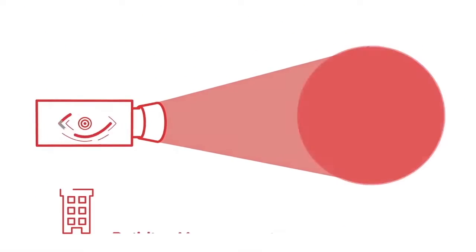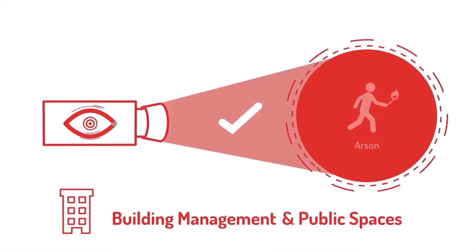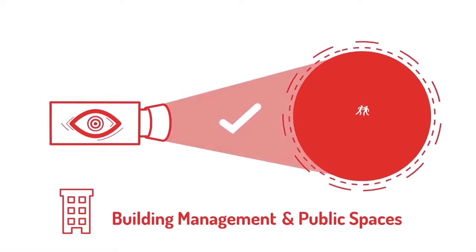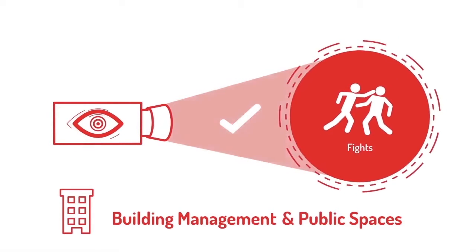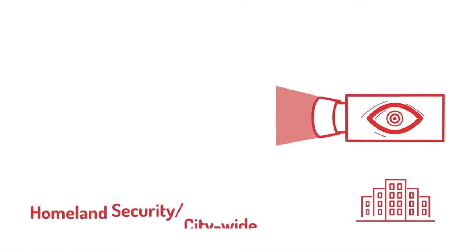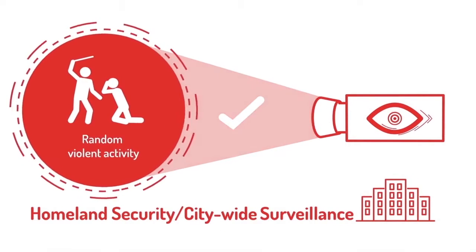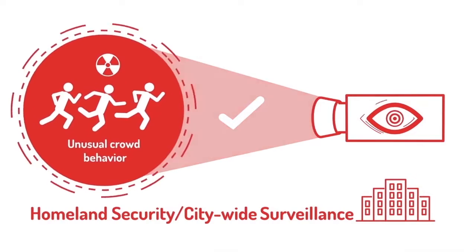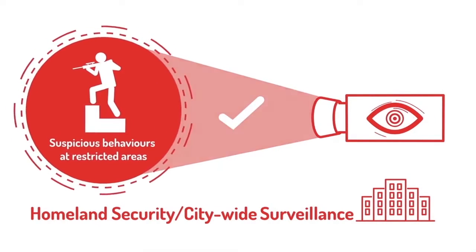ARVOS can be applied in buildings and public spaces, discovering a wide variety of abnormal events and behaviors, leading to better crime prevention and enhanced safety and security. ARVOS is sufficiently lightweight to provide up to 100% coverage for citywide surveillance, making it cost-effective and efficient in providing analytic coverage on a large scale.